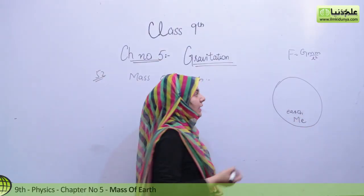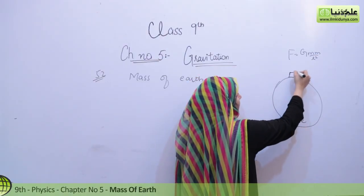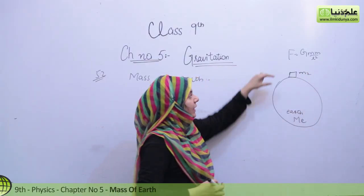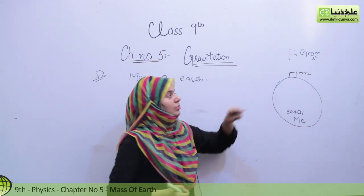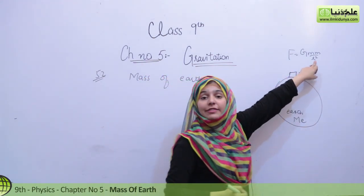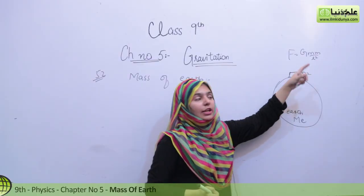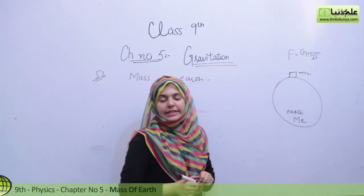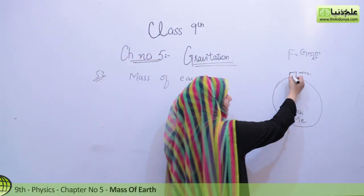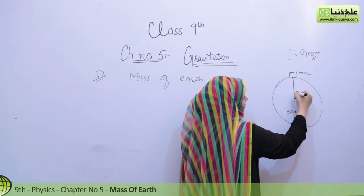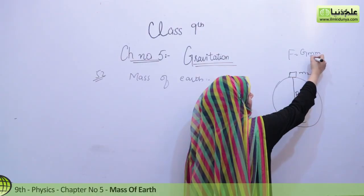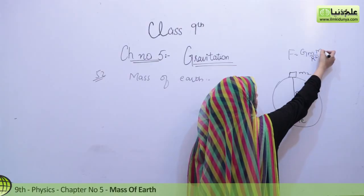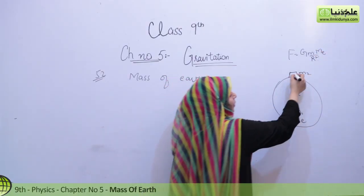We are considering that one mass is on Earth — that is M2. The distance R will not change because we need Earth's radius. So we consider Earth's radius equal to R, and it will be R squared. One mass is the mass of Earth, M_E.